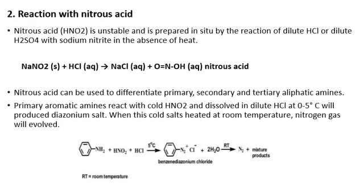The next reaction involves nitrous acid. HNO₂ is unstable and is prepared by the reaction of dilute hydrochloric acid or dilute sulphuric acid with a nitrite in the absence of heat. It can also be used to differentiate primary, secondary, and tertiary aliphatic amines.